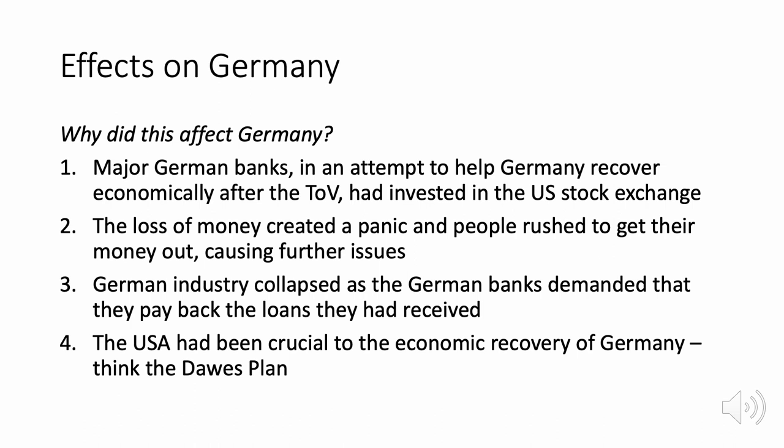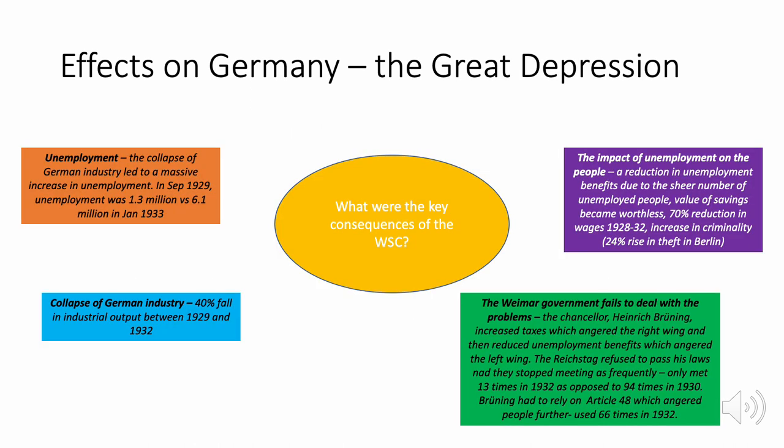There's a famous saying: when America sneezes, the rest of the world catches a cold. The key consequences of the Wall Street Crash were severe. The collapse of German industry led to a massive increase in unemployment — in September 1929 unemployment was at 1.3 million, but just four years later it was over 6 million.